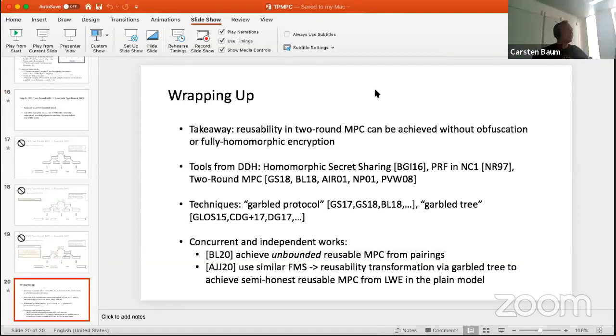Can I ask one quick question? Thanks for the nice talk. Did you think about whether it's possible to replace DDH with LPN by plugging in these two-random correlation generators? That's a great question. It's something I've actually just been starting to think about recently, but very recently. It's a natural question because you can do these silent OT extensions from LPN and things. It's a great question, but it doesn't immediately follow. It doesn't appear to be immediate. There are some extra challenges there. Thanks.